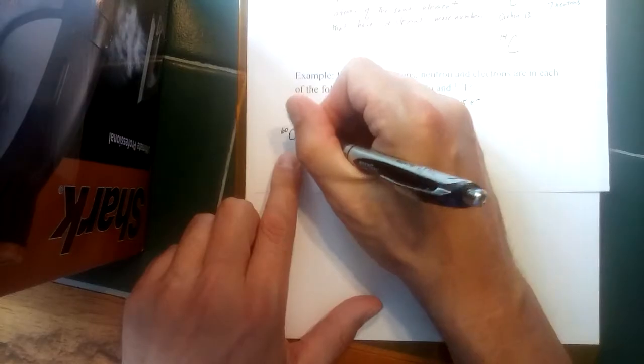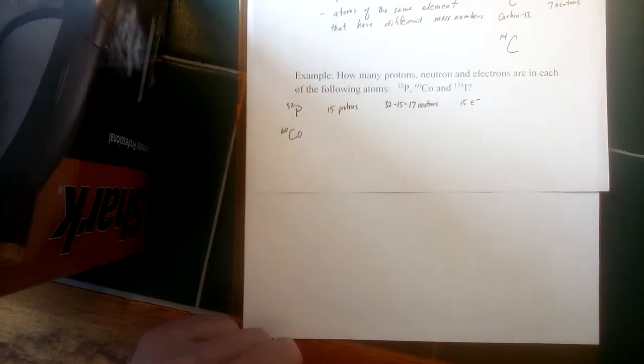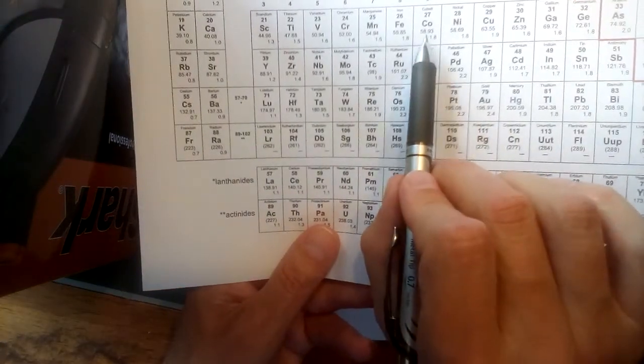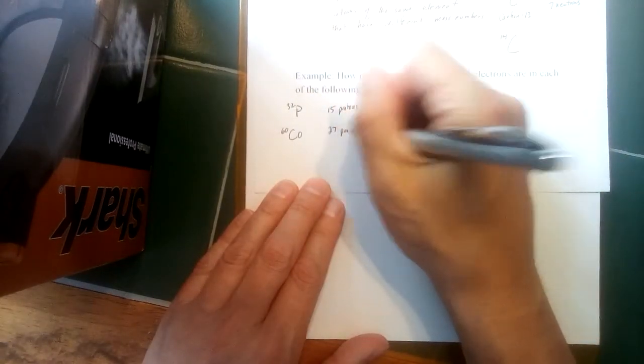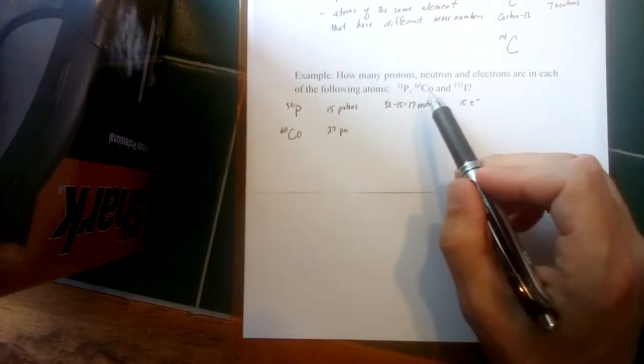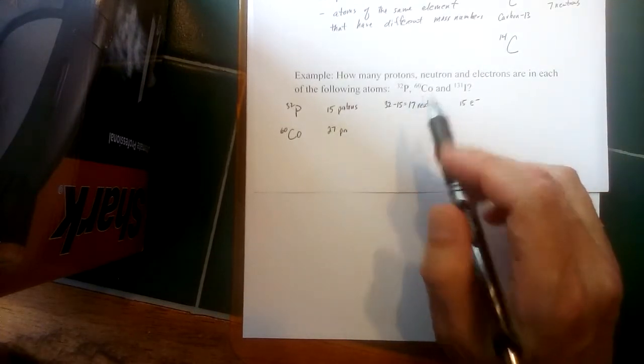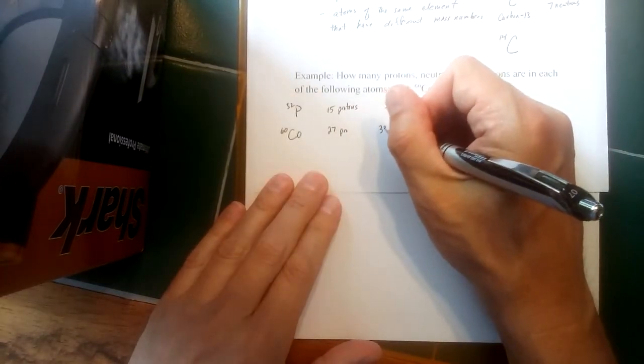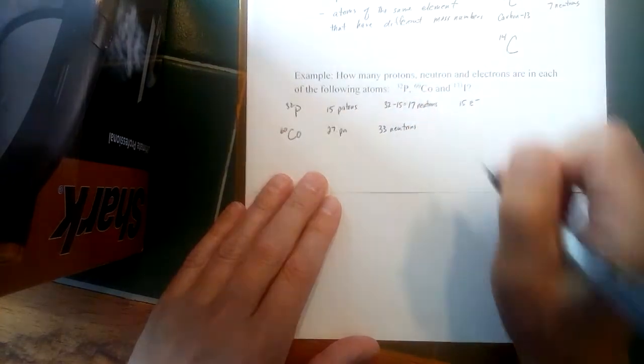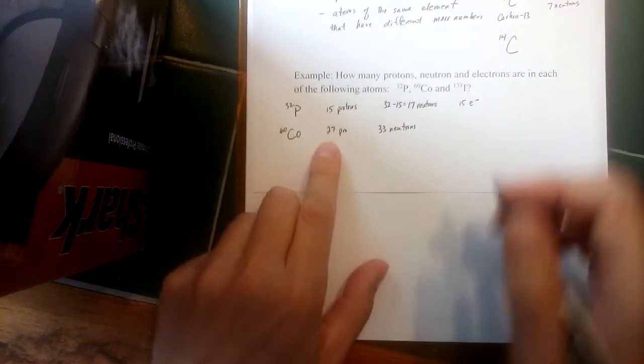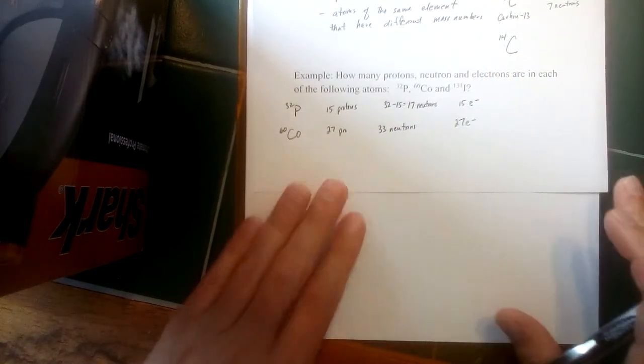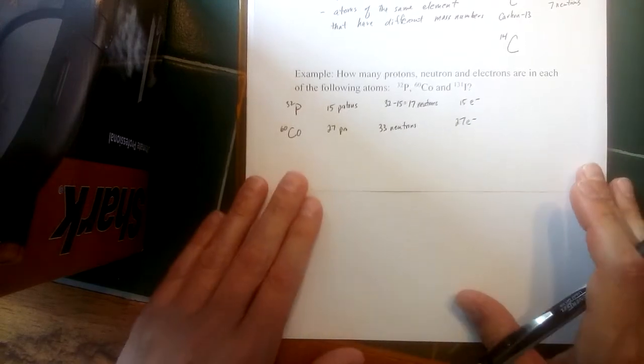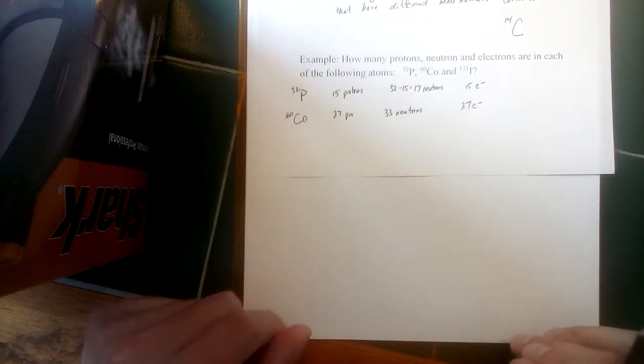For cobalt, if we find cobalt on the periodic table—and here it is in the middle—cobalt has an atomic number of 27, so that would be 27 protons. The mass number was 60. If we subtract 27 from 60, that would be 33 neutrons. Since it is neutral, there's no charge shown, that would mean it would have to have 27 electrons and 27 negative charges to balance out or counteract the 27 positive charges and leave the overall atom neutral.